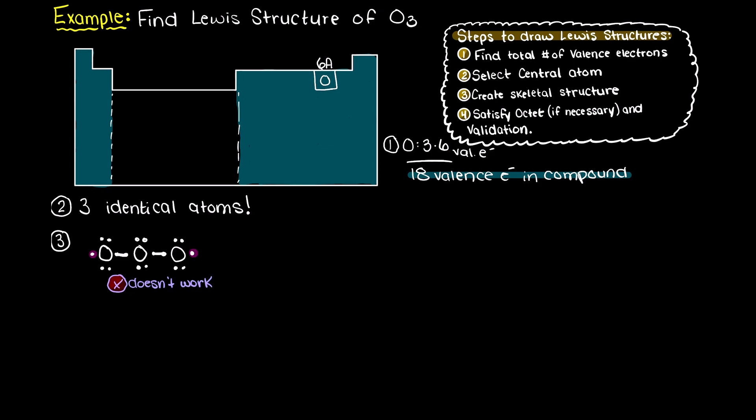Well, instead of our central oxygen atom having 2 lone pairs of electrons, maybe it will form a double bond with either of the oxygens on the left or right. So, let's recreate our Lewis structure and first fill out our outer oxygen octets like so.